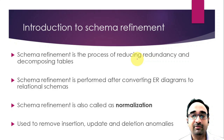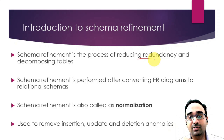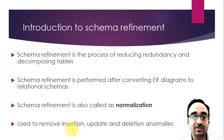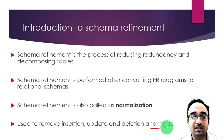The goal of normalization is reducing redundancy. Because of redundancy we have different problems — you will face problems when you insert data, when you update data, and when you try to delete data from the table. All these things are called anomalies.